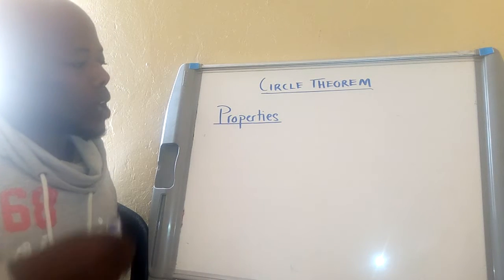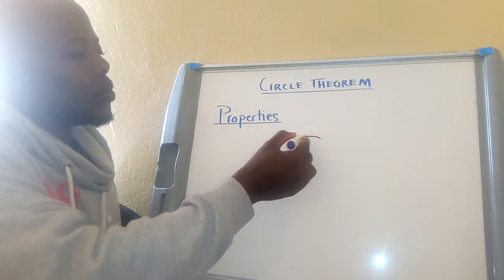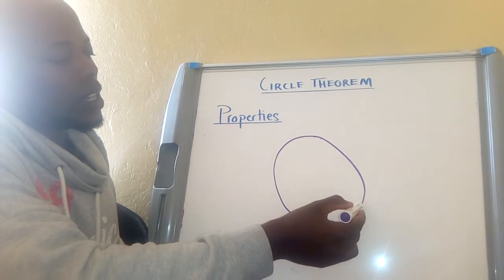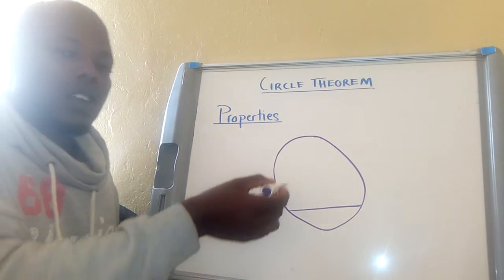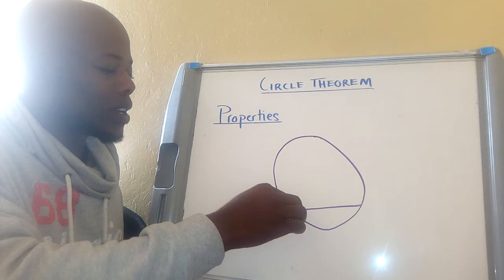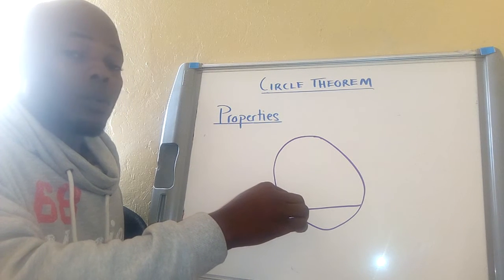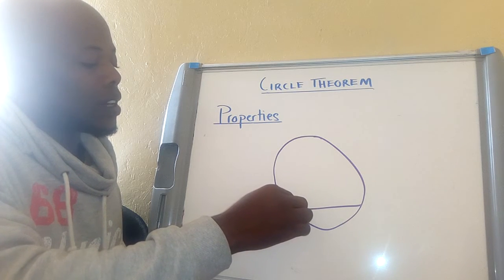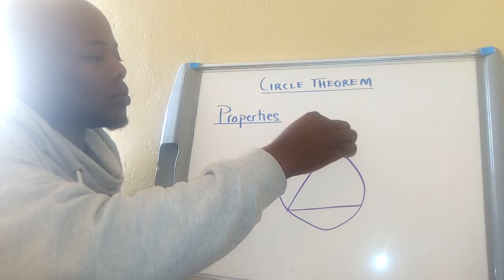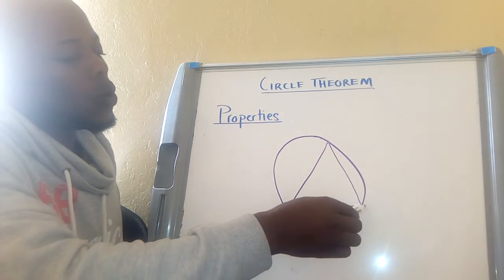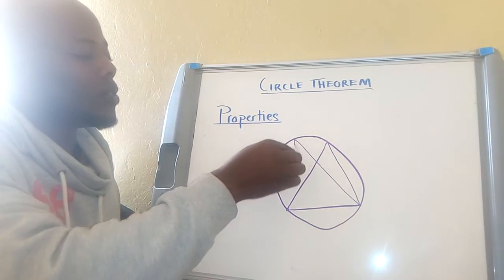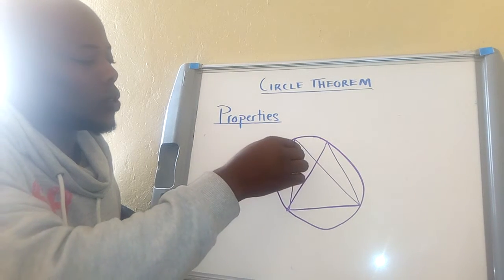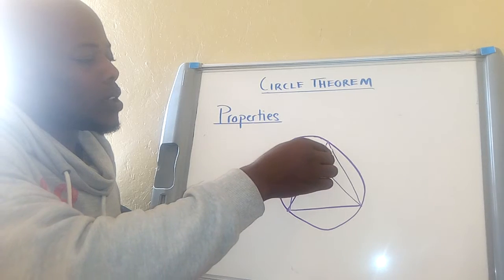The first property is angles coming from the same segment. If you have a circle and there is a segment here — remember from the introduction we talked about the segment and the chord — this chord forms a segment, and an angle formed coming from this segment will be equal to whatever angle is formed coming from the same segment.